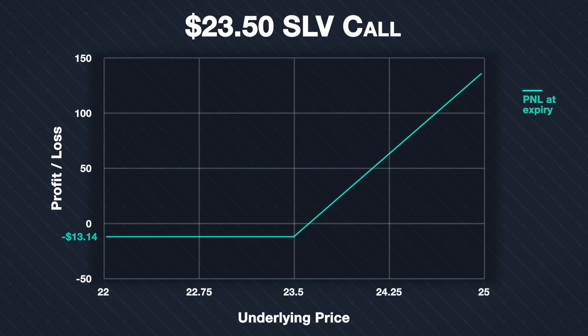If SLV is above our strike price of $23.50 at expiry, we calculate profit or loss using the formula: (price at expiration − strike price − premium paid) × contract multiplier × number of contracts. Instead of just the premium paid per share, we use the total cost per share including fees, which is $0.1314.